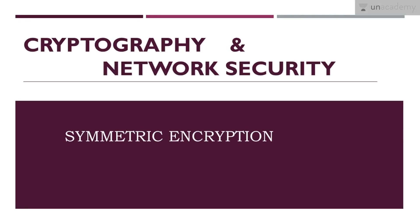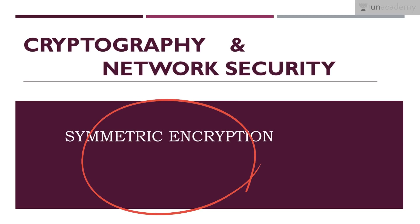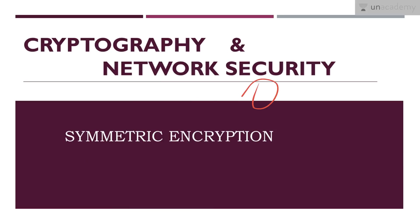In the previous lesson we had an introduction to the two types of cryptographic techniques: one was symmetric and the other was asymmetric. Symmetric means using a single key for both encryption and decryption, but in asymmetric we use a pair of keys — so there will be two keys.